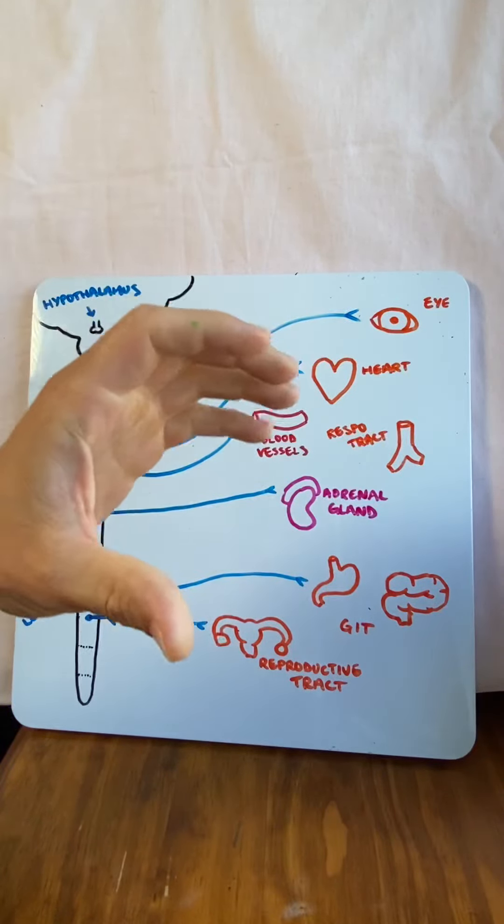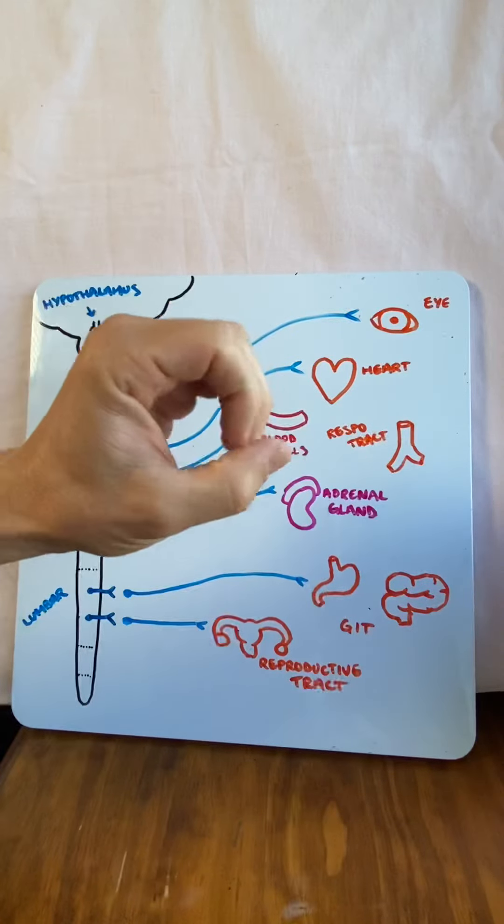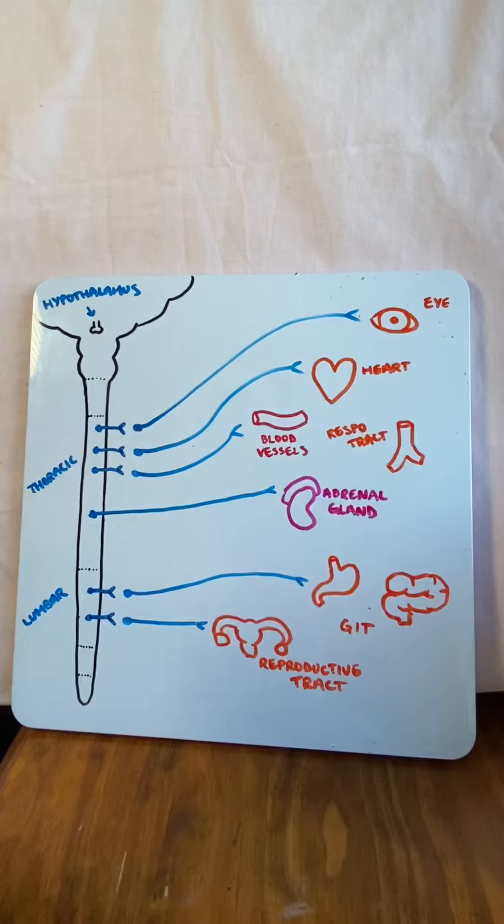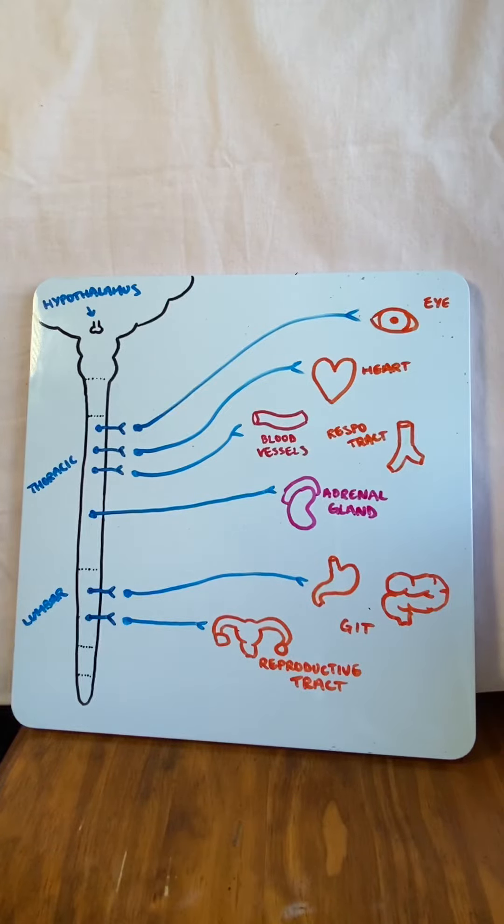The blood vessels will either constrict or dilate depending on which ones. Those of the heart will dilate but those of the skin will constrict. This means blood gets redirected from the skin to the muscles of the body. We can fight and run away and it's also the reason why we look pale when we get scared.